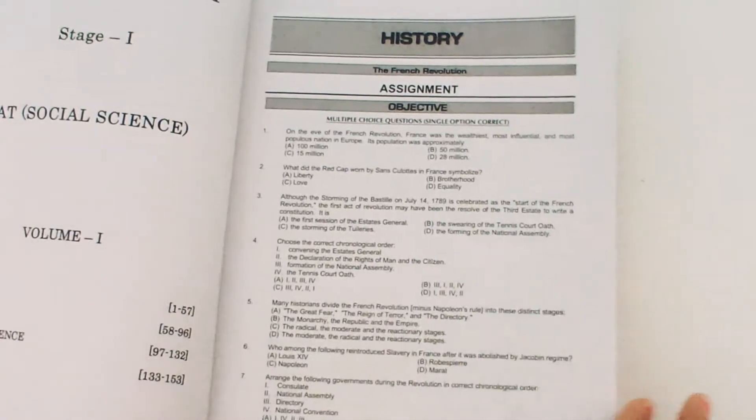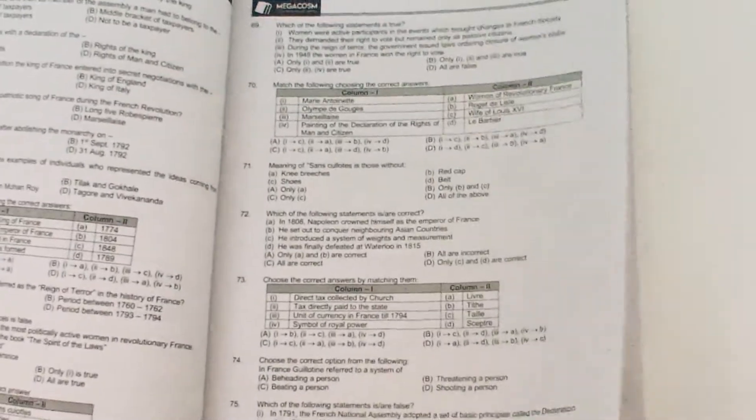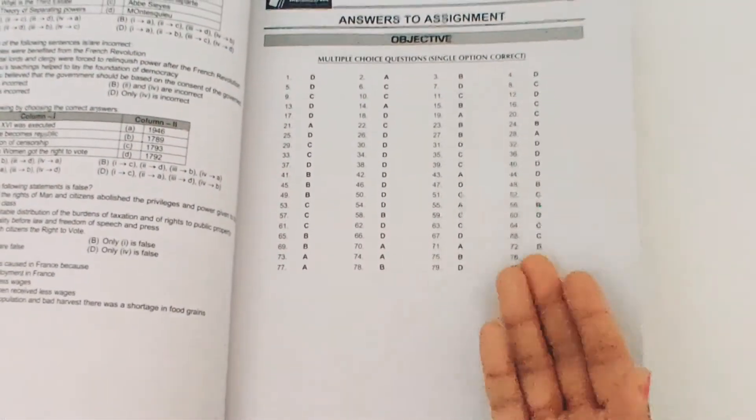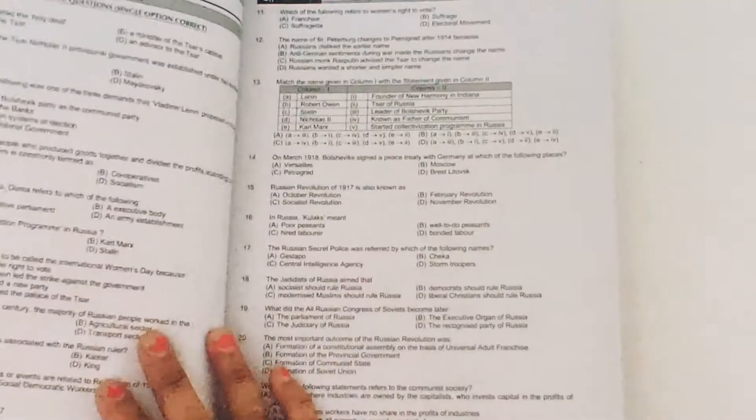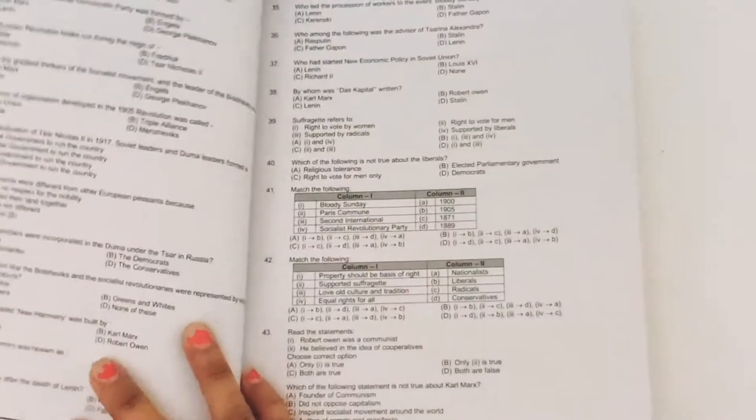As you can see in history's first chapter there are many MCQs for your practice, around 75 to 80 questions, and this is the answer sheet. So you can check your answer and completely revise your chapter with these MCQs.